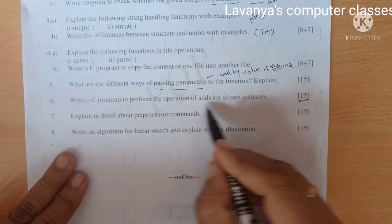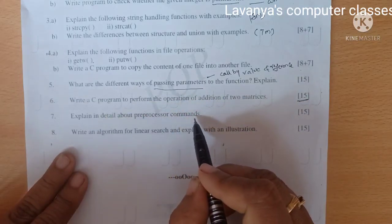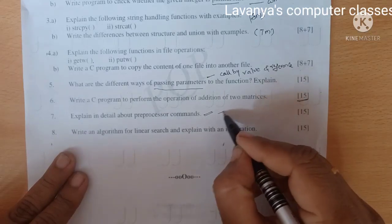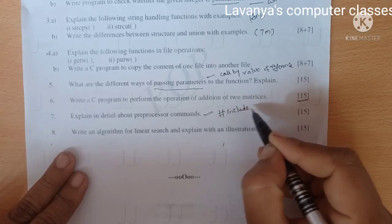Fifth A is explain what are the different ways of passing parameters to the function. The passing parameter techniques are call by value and call by reference. Explain these 2 with example programs. Directly they are asking a 15 marks question.